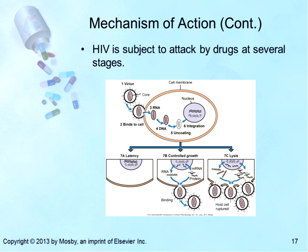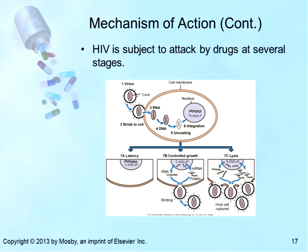Certain agents can block the binding of HIV to CD4 receptors on the surface of T helper cells. Other agents keep viral RNA and reverse transcriptase from leaving their protein coat. Drugs such as AZT and other dideoxynucleosides prevent reverse transcription of viral RNA into viral DNA. Antisense oligonucleotides could block the transmission of mRNA into viral proteins. Certain compounds could interfere with viral assembly, and antiviral agents such as interferon can keep the virus from assembling itself and budding out of the cell.